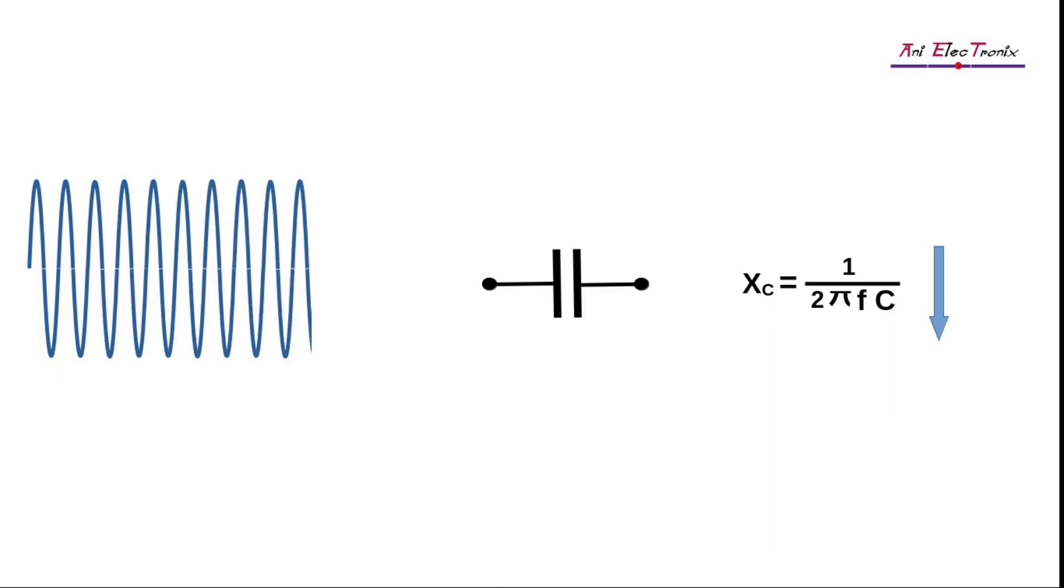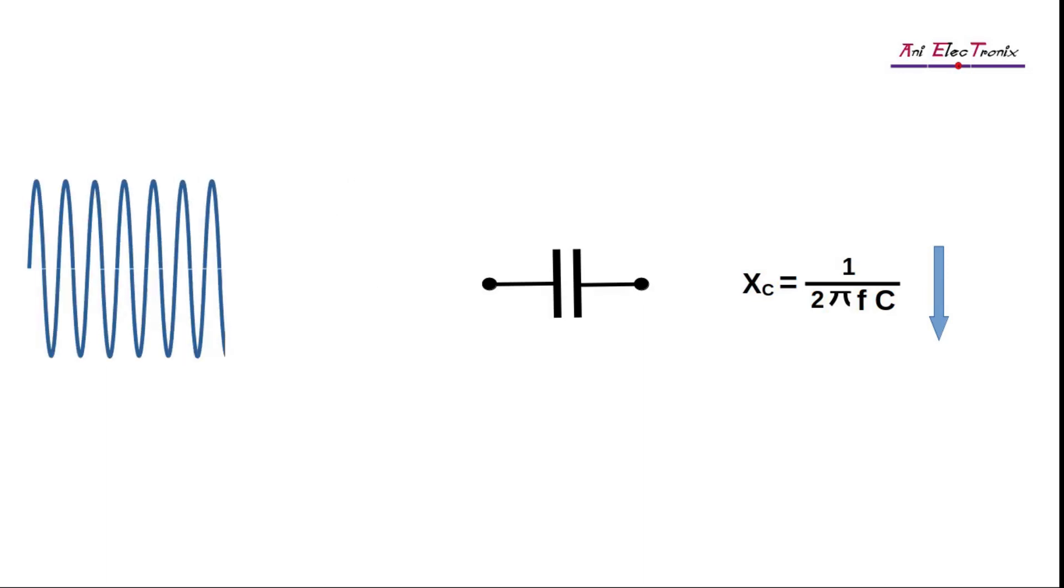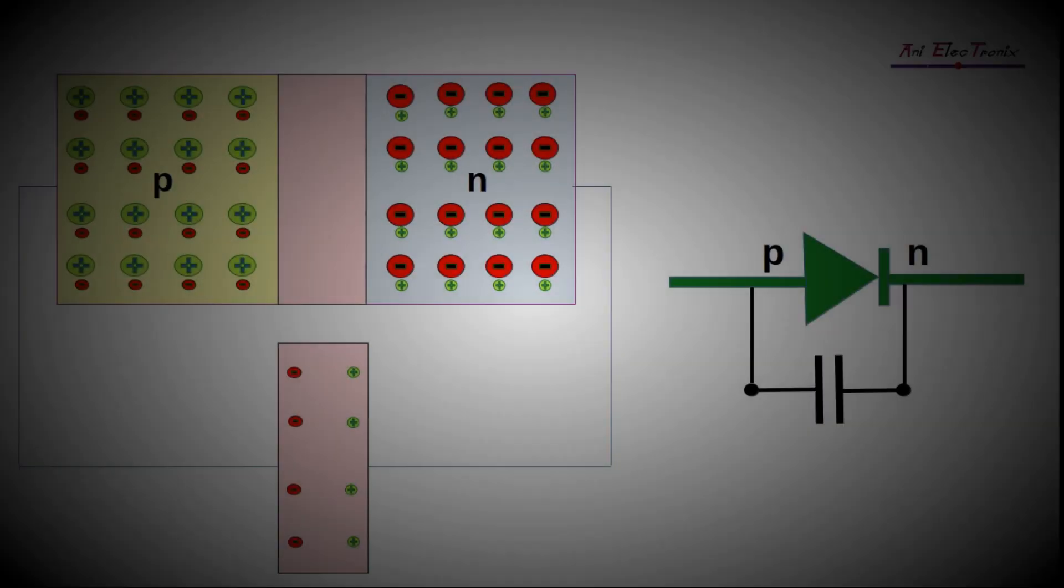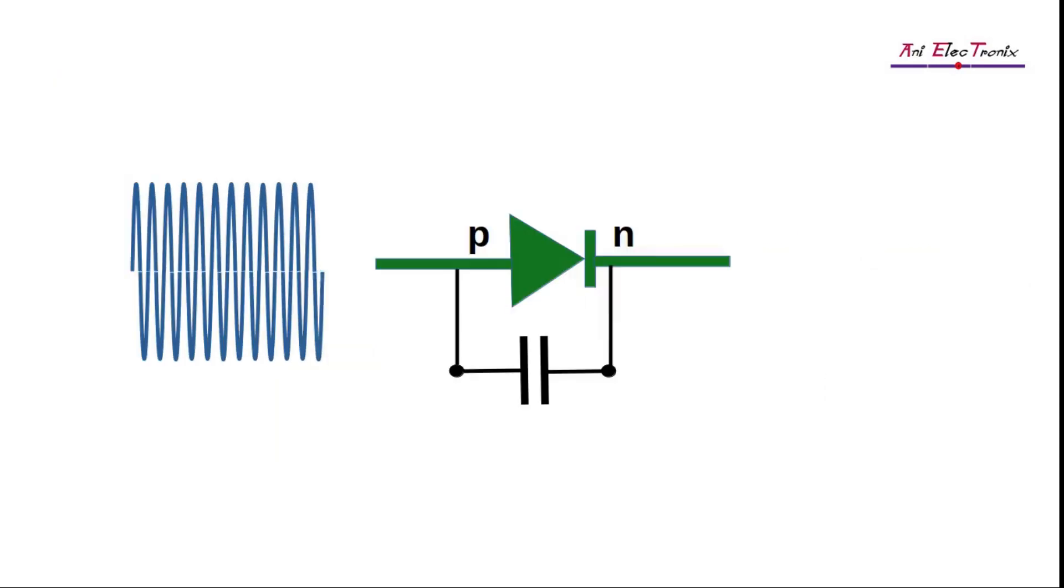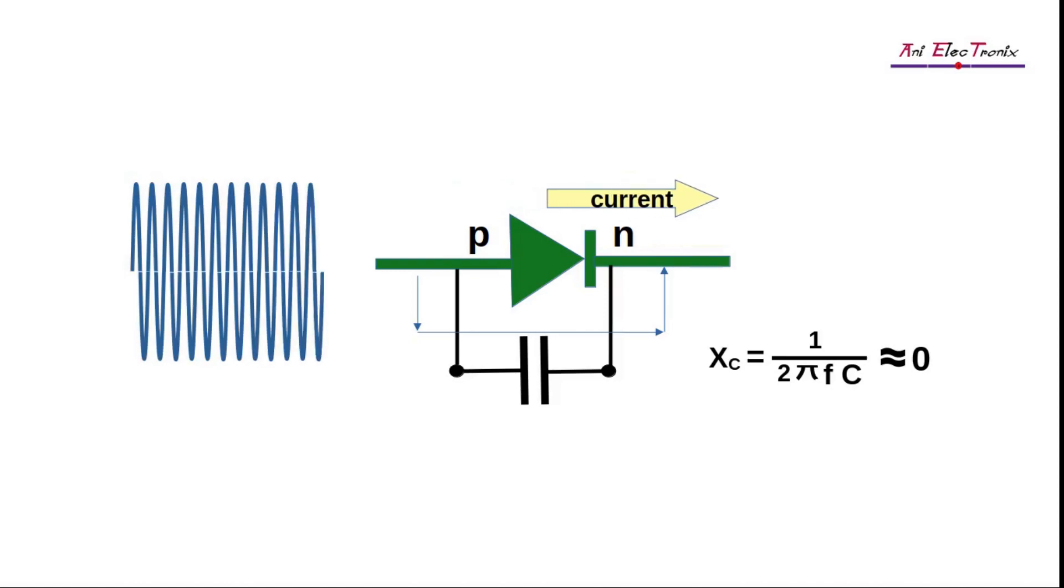During high frequency, the capacitive reactance for the barrier potential or the PN junction capacitance becomes extremely low. When it reaches a certain level, the switching performance of the diode is seriously impacted. A model of the diode circuit will show that the barrier capacitance is connected parallel to the diode. In the worst-case scenario, the capacitive reactance is so small that the high-frequency current passes through the junction capacitor and the diode is short-circuited. Hence, the diode won't function.